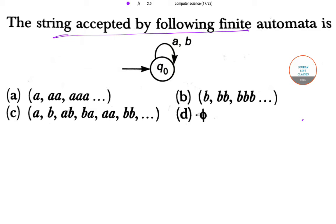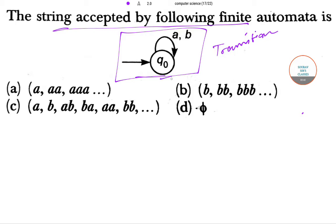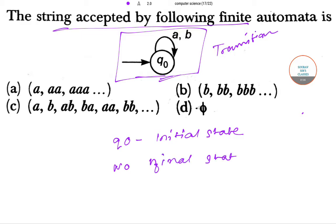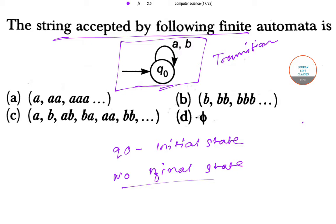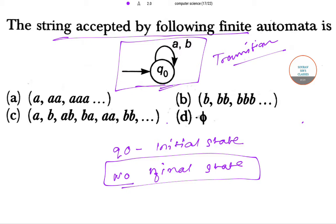Our question is: what string is accepted by the following finite automata? This is the transition diagram we have to follow. Here you can see Q0 is the initial or starting state, but there is no final state or termination state. So no string can be accepted if there is no final state. This is really important for a transition system, so our answer will be option D.